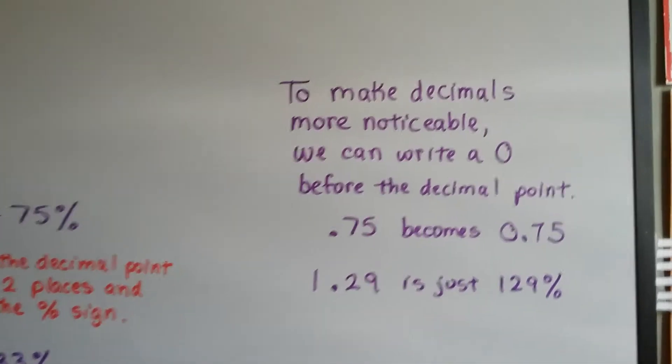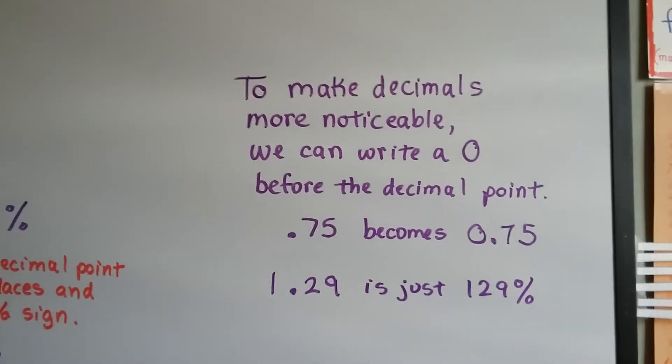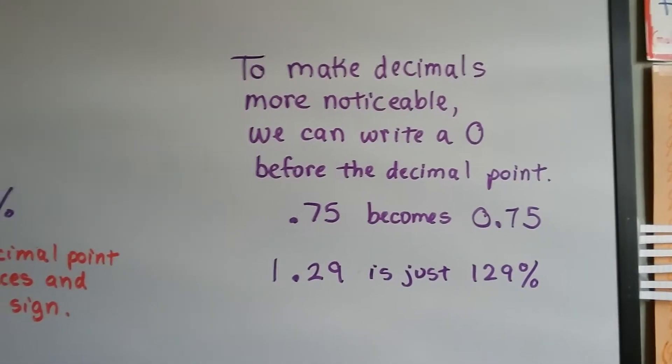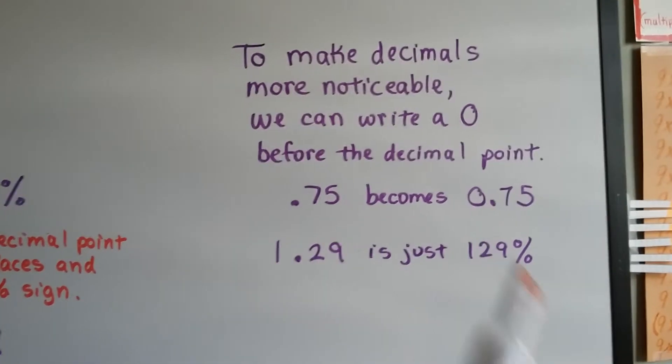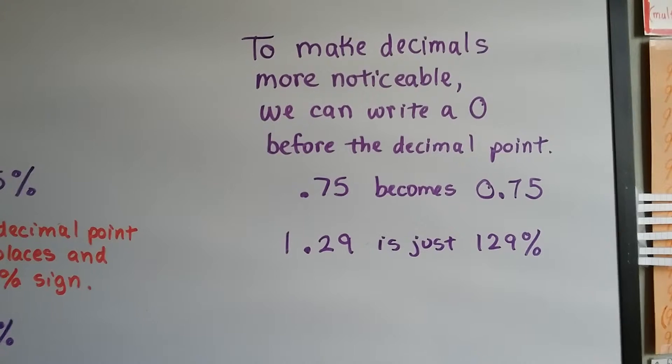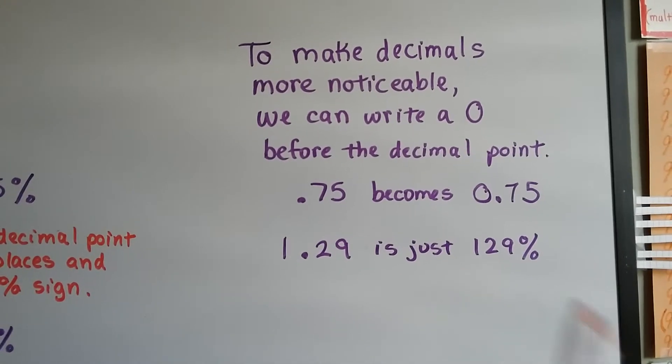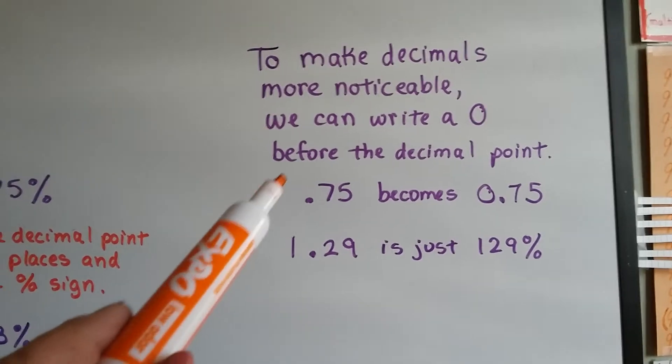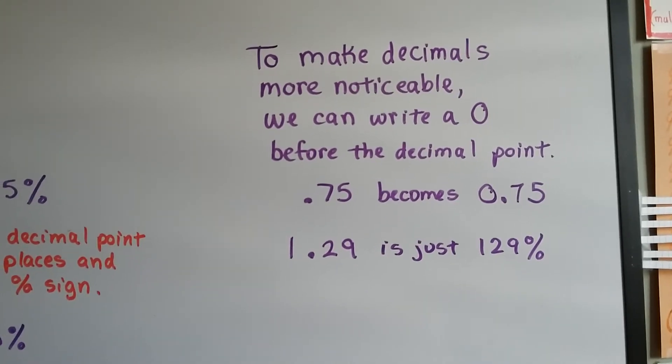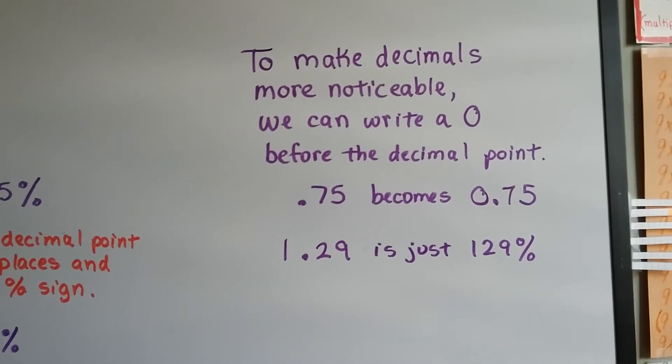We can make decimals more noticeable, more visible. We can write a zero before the decimal point, so 0.75 would become 0.75. That'll make it stick out that it's a decimal. And 1.29 is just going to be 129%, so the zero wouldn't affect it. But if you want to write a zero up here so that you can see that it's a decimal, you can do that.